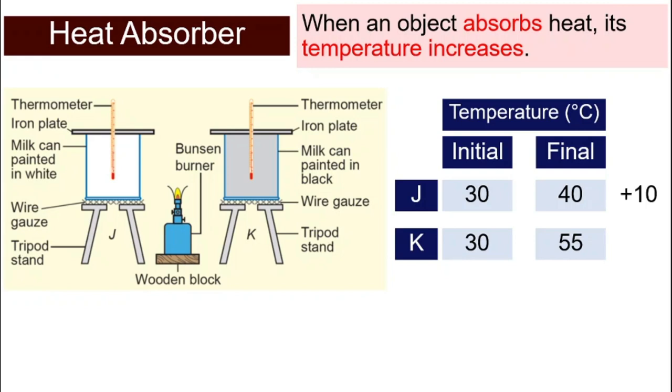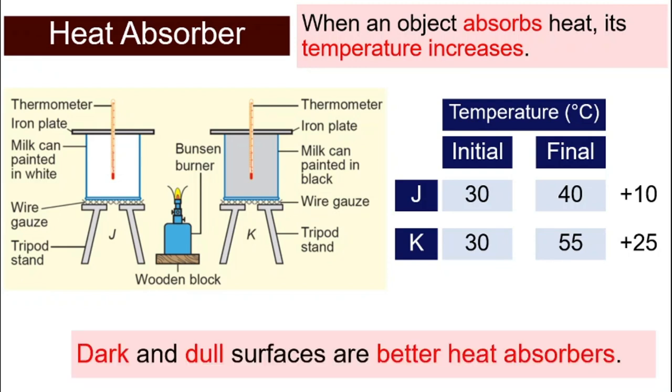That means for J, the white milk can, there is an increase of 10 degrees Celsius, whereas for milk can K, that is in black, shows an increase of temperature of about 25 degrees Celsius.